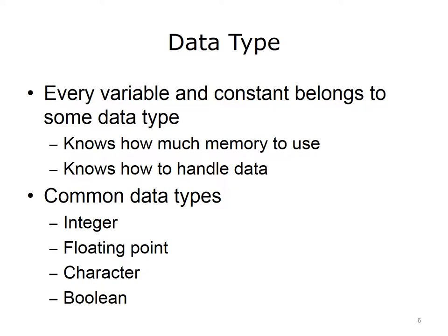Among other things, the data type of a variable determines how much memory needs to be allocated to store its value. For example, floating point numbers require more space than integers. Also, the program and computer need to know how to handle the data. Different data types encode values into binary numbers differently. Hence, a value stored in memory needs to have a type associated with it so that it can be used properly.